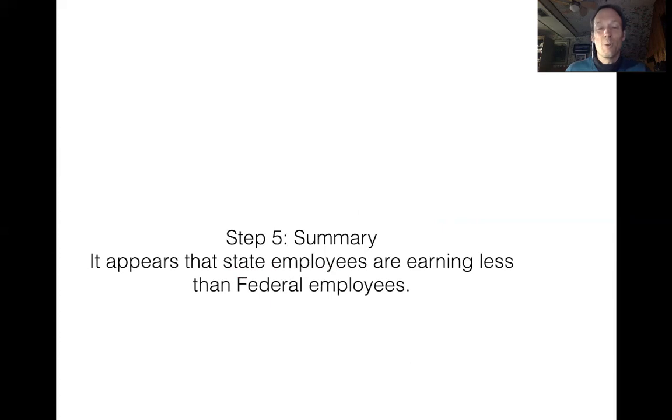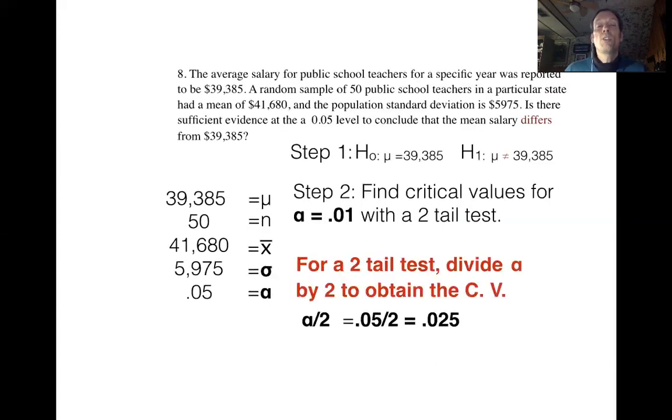Let's take a look at one more practice question. Pause the video if you'd like for a couple minutes, read through the question. Okay. So if you're a public school teacher, you're making a salary of about $39,385. And in a particular region of the country, there's a belief that you're making an amount that's different than this. So to test that out, find out if it's really true, 50 public school teachers in that region were sampled. And it turned out that they were averaging $41,680 in salary. Now we have to figure out is $41,680 significantly different from $39,385.